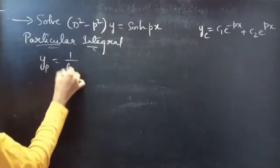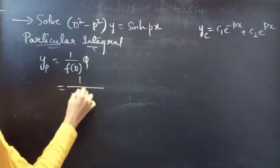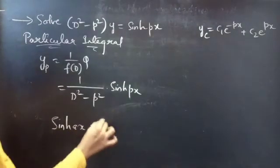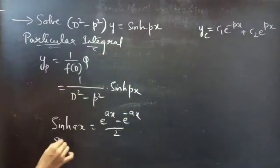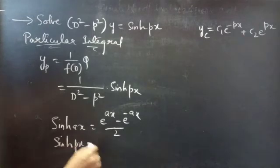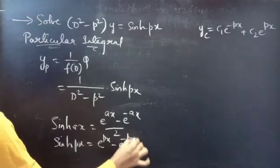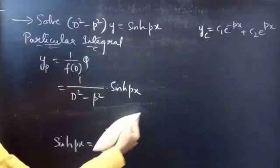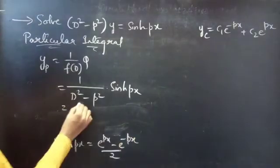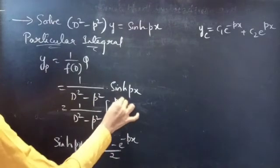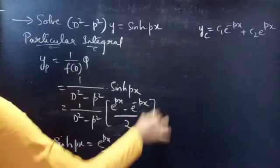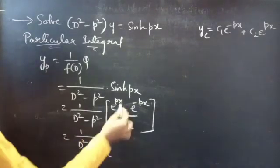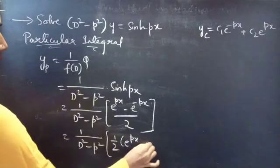Now let's find the particular integral, given by yp = 1/f(D) · Q, where f(D) = D² - p² and Q = sinh(px). Since sinh(ax) = (e^(ax) - e^(-ax))/2, we have sinh(px) = (e^(px) - e^(-px))/2. So yp = 1/(D² - p²) · (e^(px) - e^(-px))/2.